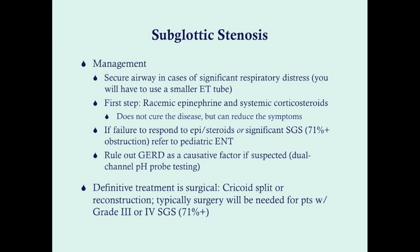For management, secure the airway in cases of significant respiratory distress. You'll need to use a smaller endotracheal tube because stenosis prevents passage of the expected tube size. First-line treatment is racemic epinephrine and systemic corticosteroids. These do not cure the disease but can reduce symptoms. Once the airway is secured — or if the patient is saturating adequately without one — give epinephrine and corticosteroids, particularly corticosteroids, to reduce symptoms.